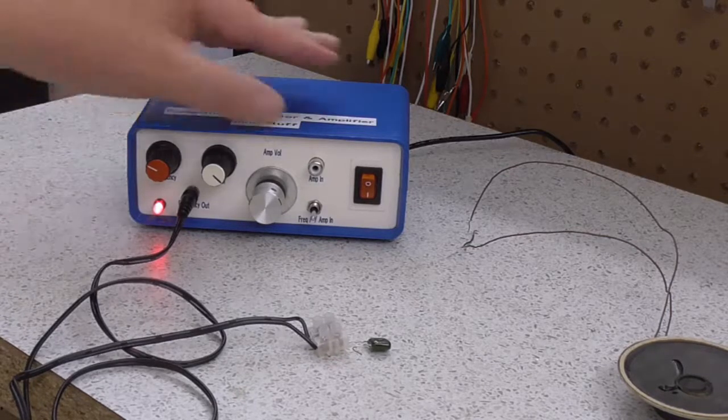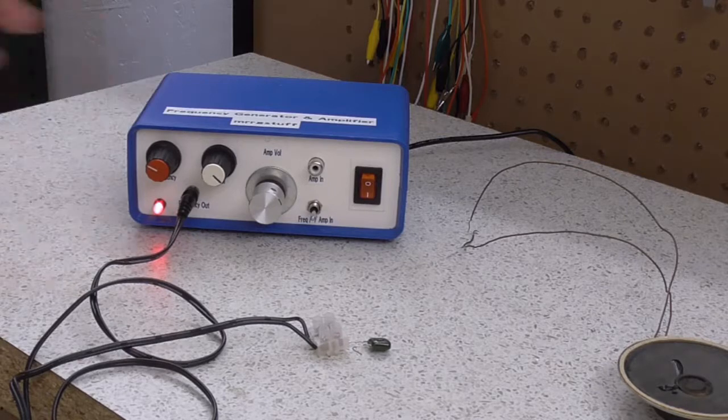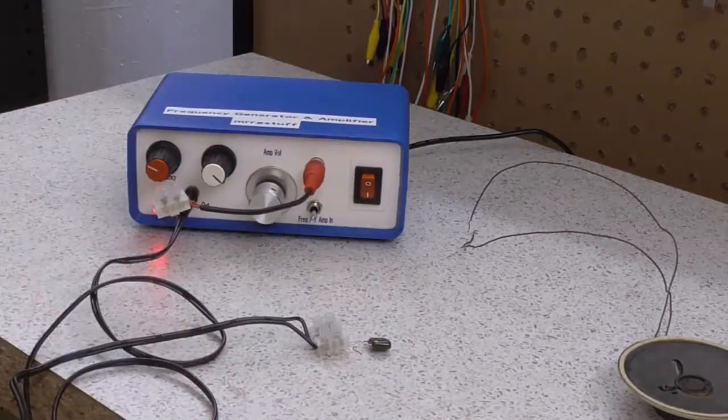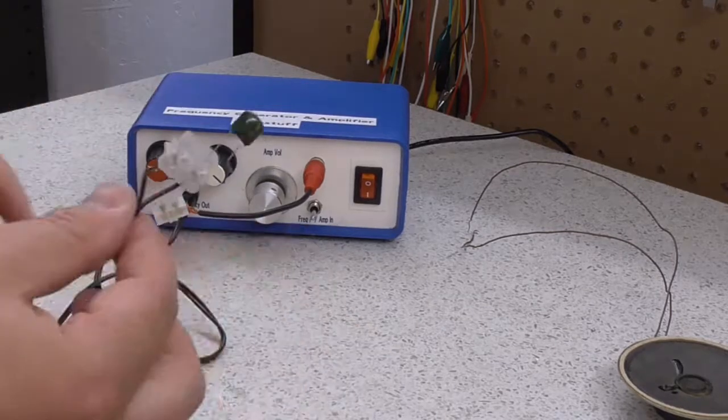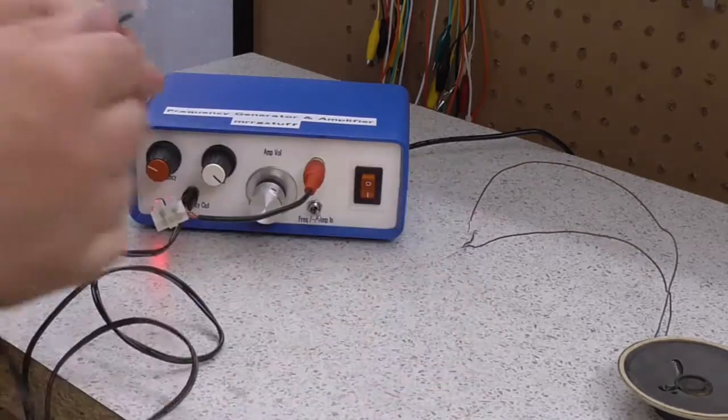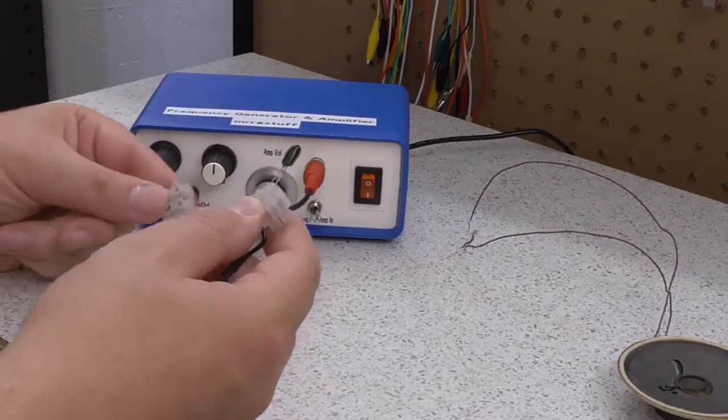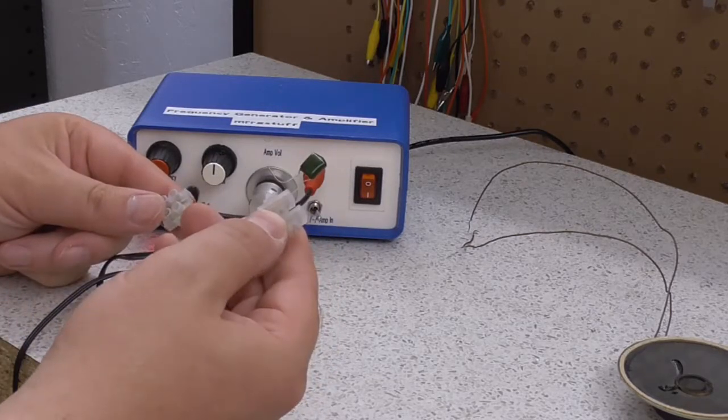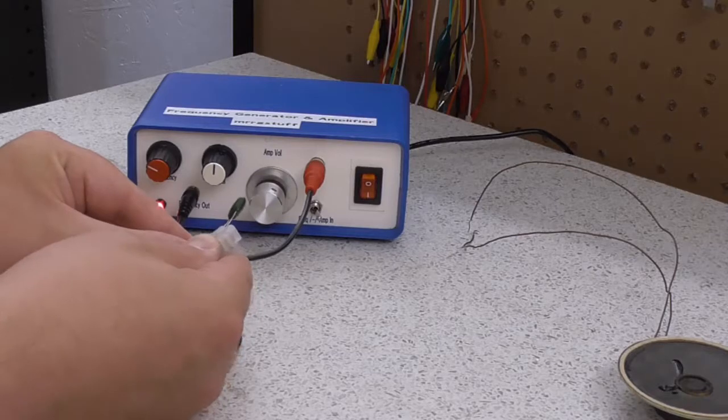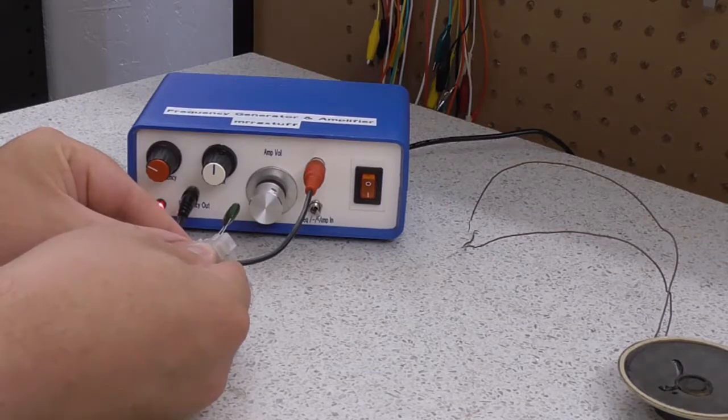Now, the other feature this has is the amp in. Now, I don't have a handy source of input. So, what I can do is I can plug a little adapter in here. Now, and then feed the output from the frequency generator back into the amp input. So, if I select amp in. And maybe adjust that volume down a bit. So, by connecting the output to the input. The sound is going back in. Or the signal is going back in. And going through the amp. But through the amp input.